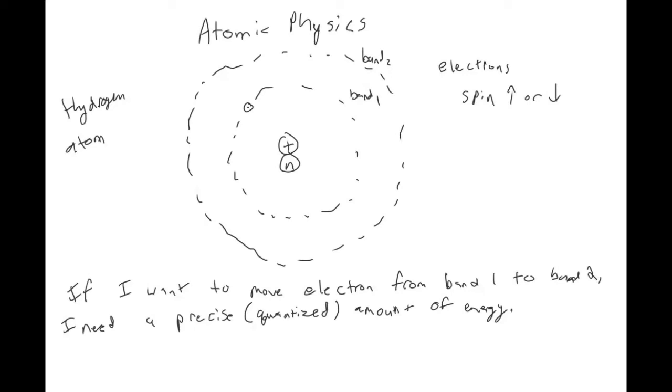From chemistry, do you guys remember is band one at a higher energy or is band two at a higher energy? Band two is going to be at a higher energy, and so this atom would need to absorb some energy from somewhere. The way that it's going to absorb that energy is by a photon interacting with this atom.